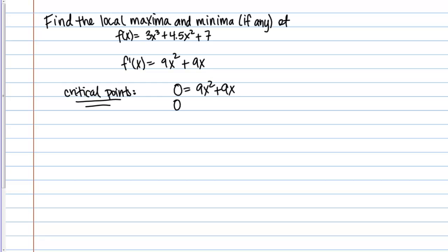To solve this, it's very helpful to factor on the right hand side. I can pull out a 9x and I'm left with x + 1. Then I would just set each factor equal to 0. I get solutions of x = 0 and x = -1. With your critical points, you always want to check that they are in the domain of your original function. My original function is just a polynomial. These are in its domain because its domain is all real numbers. I have my two critical points.